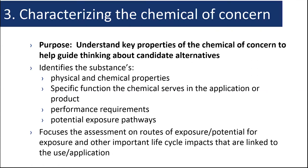The purpose of this step is to understand key properties of the chemical of concern that will guide your thinking and the thinking of your stakeholders about possible alternatives. Characterizing the chemical of concern involves identifying its physical and chemical properties, potential exposure pathways that could lead to an impact on your workers or the environment, and the mechanisms that impact its function. This step forces you to focus your assessment on pertinent routes of exposure as well as on other important life cycle impacts that are meaningful given how the alternative will be used, in order to replace the function served by the chemical of concern.